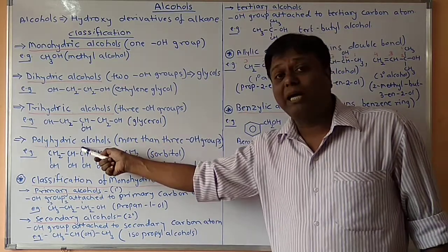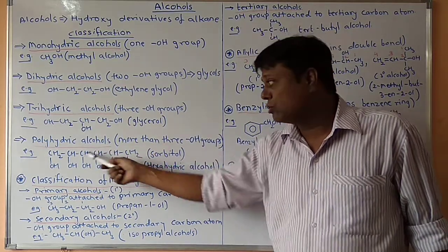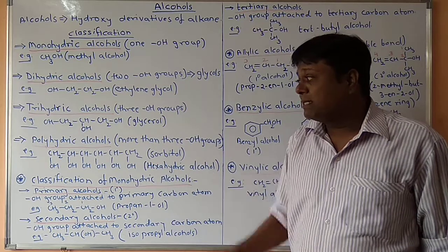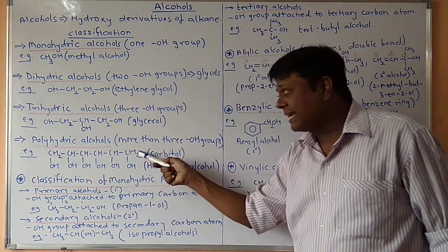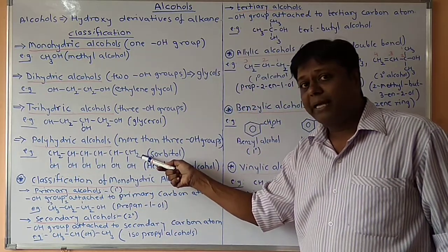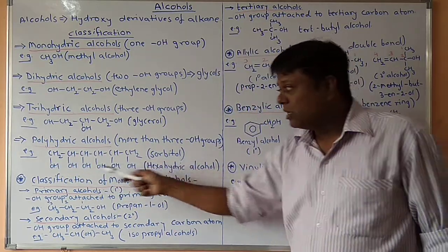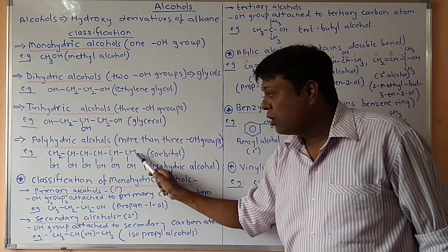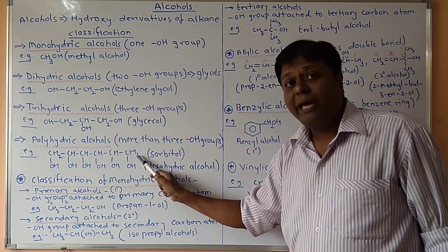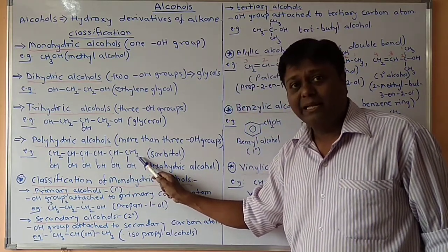Next: polyhydroxy or polyhydric alcohols. Here, more than three hydroxy groups are attached, and that is called a polyhydric alcohol. For example, six hydrogen atoms of hexane are replaced by six hydroxy groups.